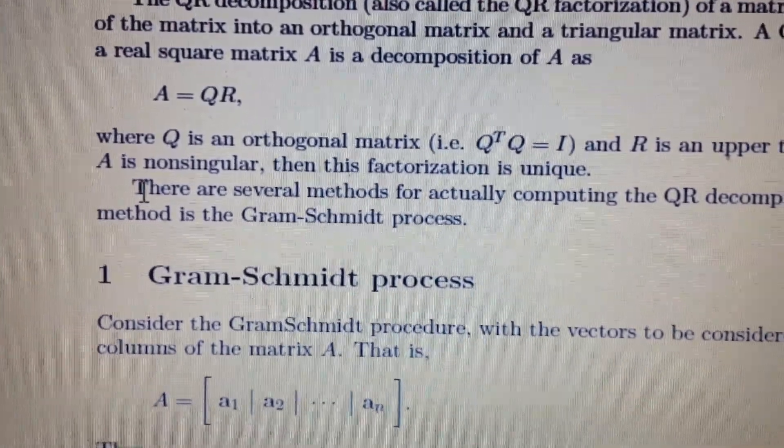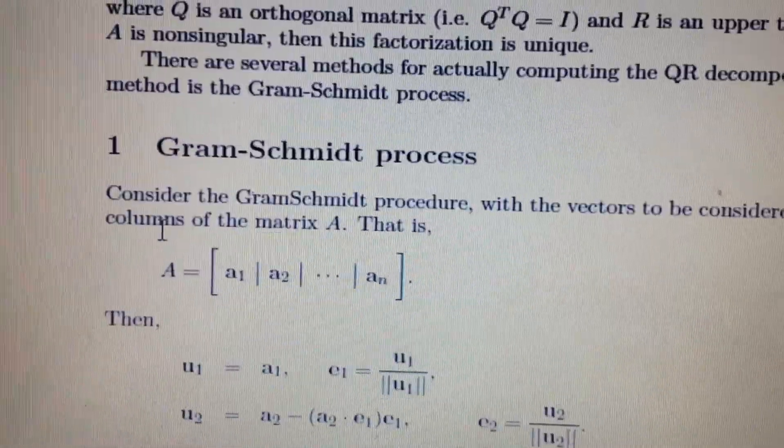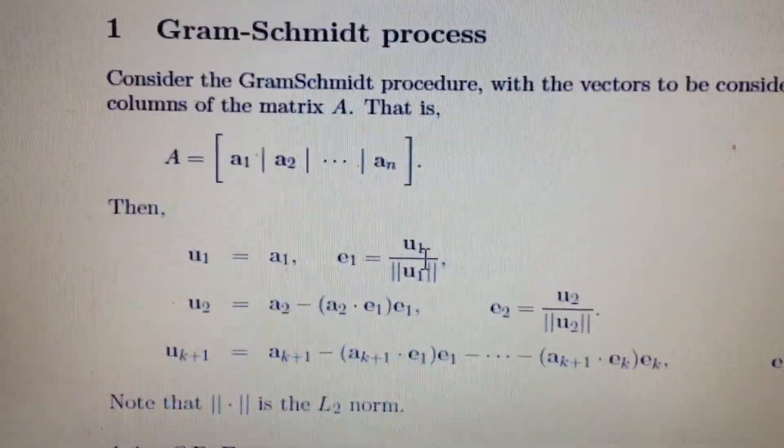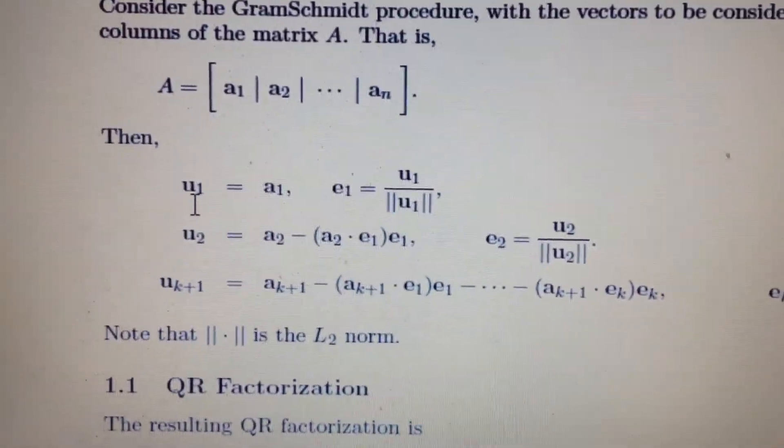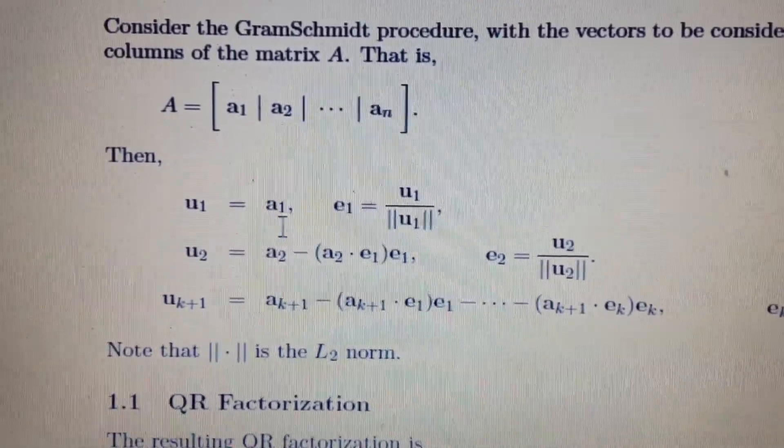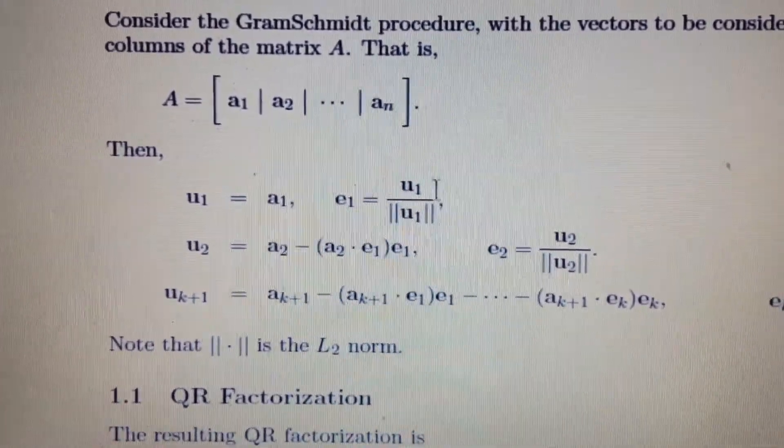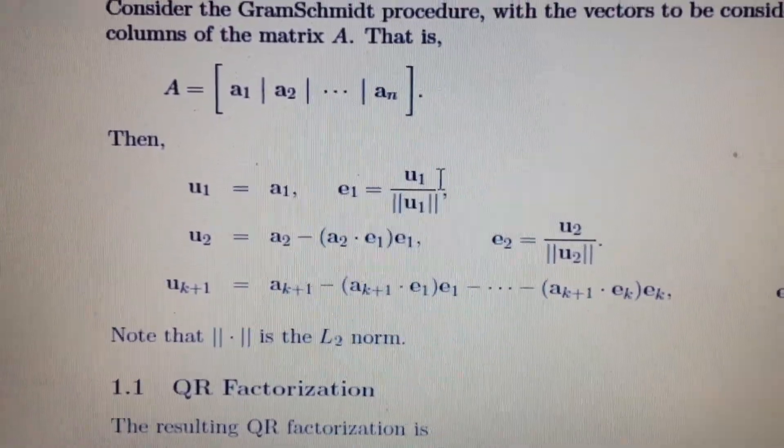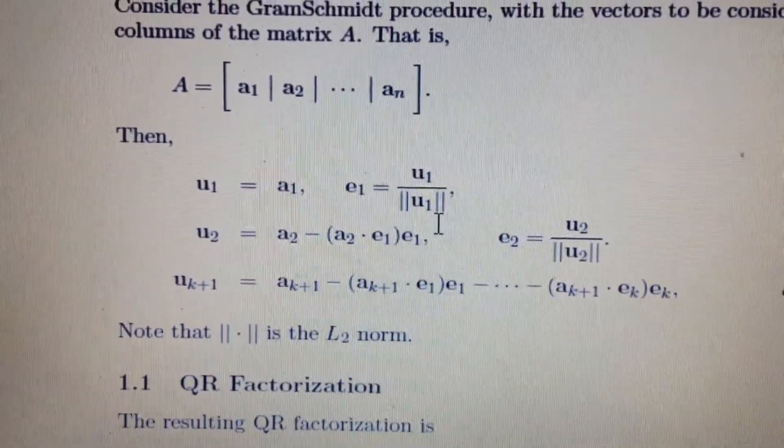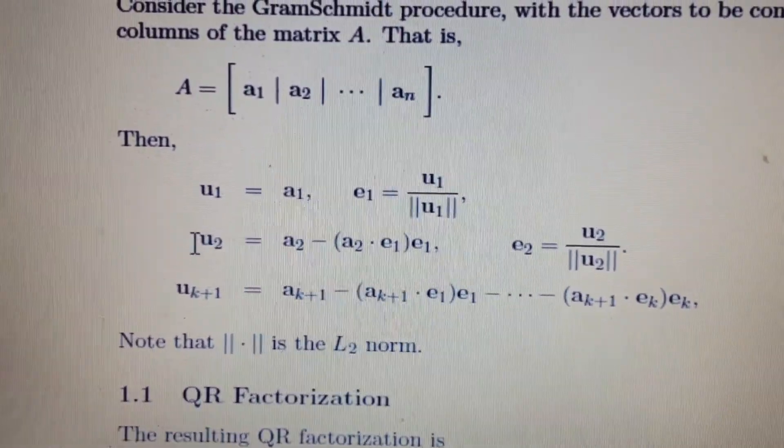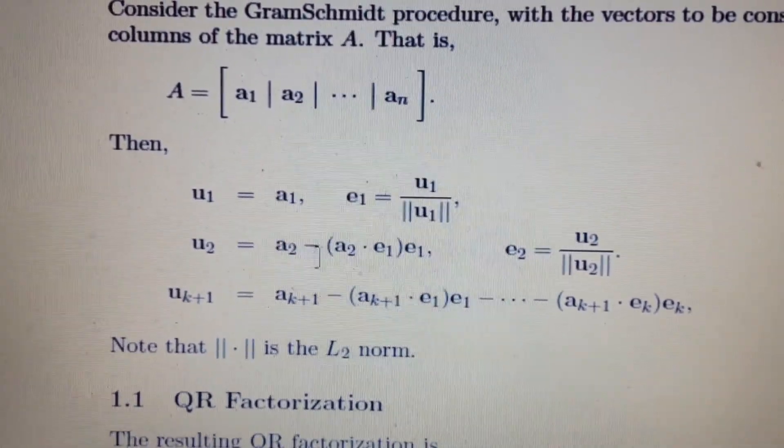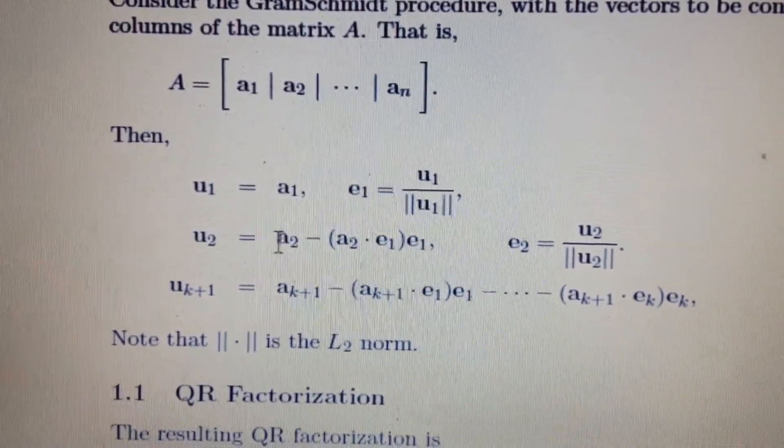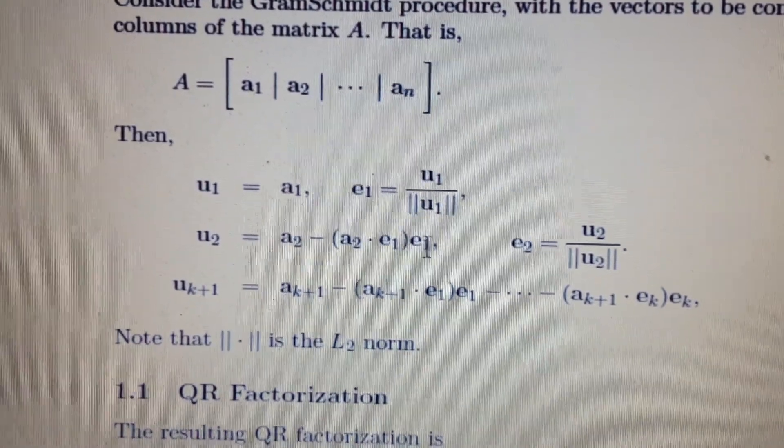The Gram-Schmidt process is actually the process of orthogonalizing. The way this works is we have A written out as column vectors, and then we take unit vectors from A. E1 is the direction given by U1 divided by the norm of U1, and U2 is given as A2 minus the second vector in the direction of the first vector.